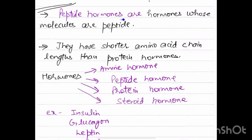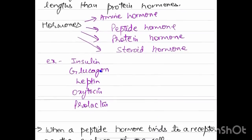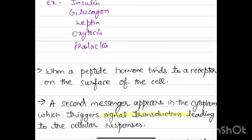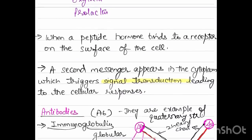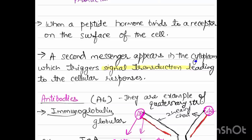Peptide hormones are hormones whose molecules are peptide in nature. They have shorter amino acid chain lengths than protein hormones. There are amine hormones, peptide hormones, protein hormones, steroid hormones. There are a lot of examples like insulin, glucagon, leptin, oxytocin, prolactin. When a peptide hormone binds to a receptor on the surface of the cell, a secondary messenger appears in the cytoplasm and triggers signal transduction leading to the cellular responses.